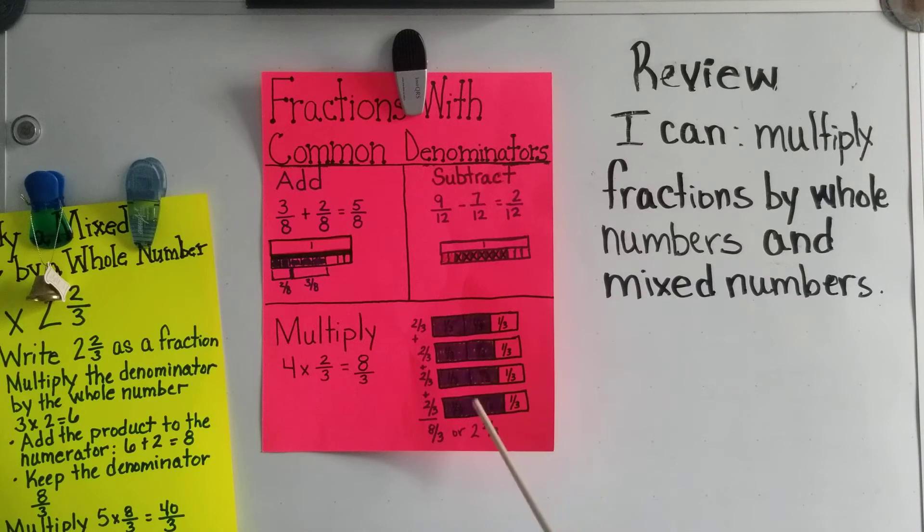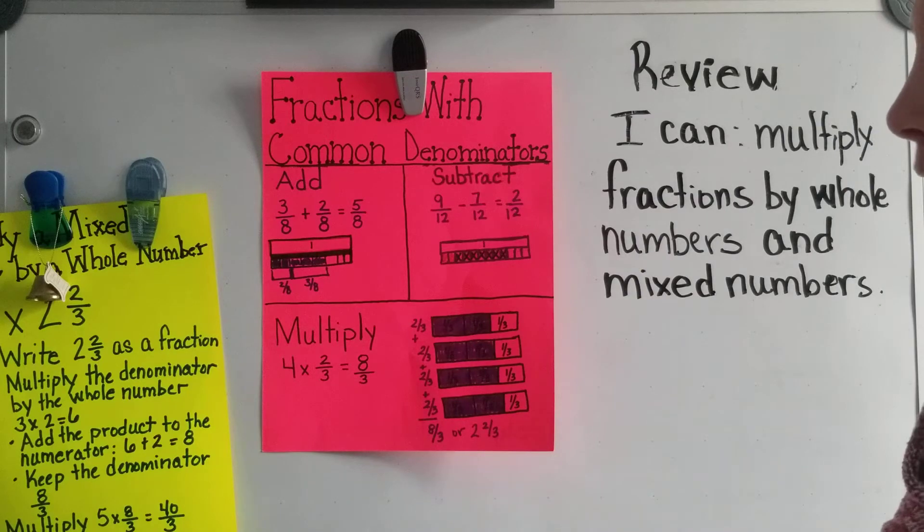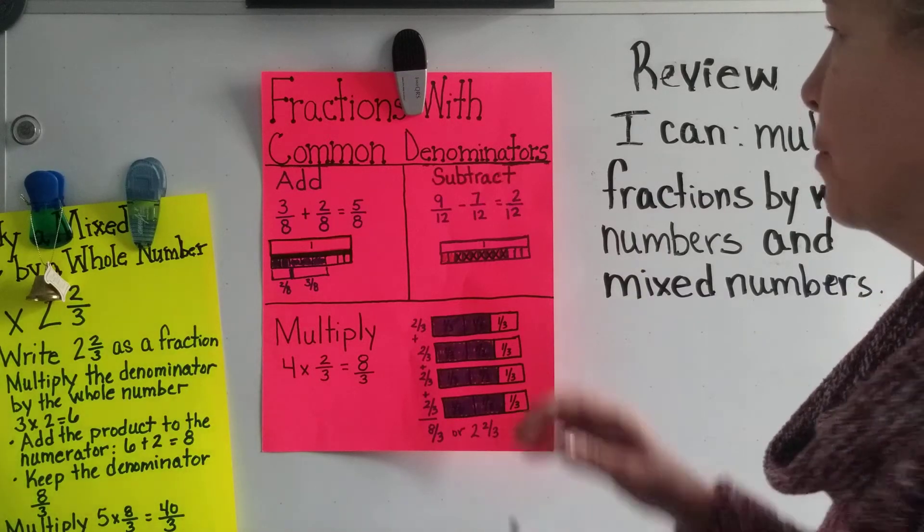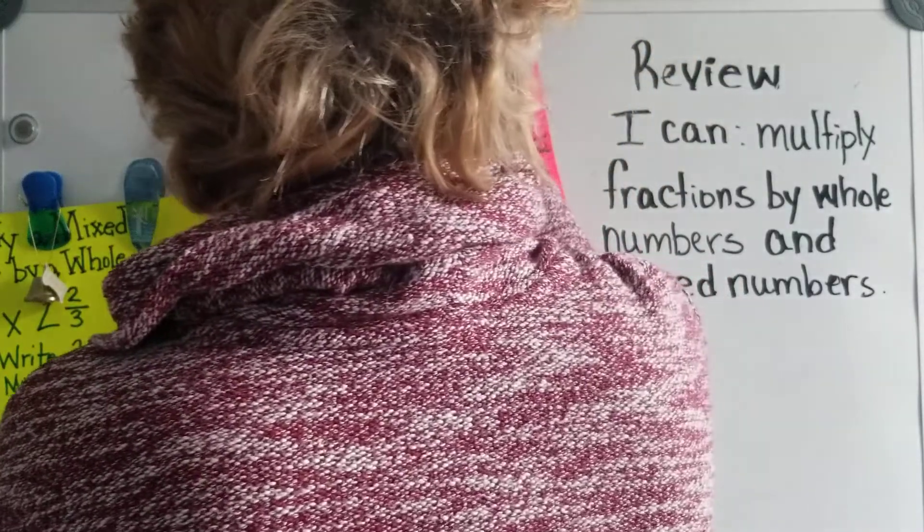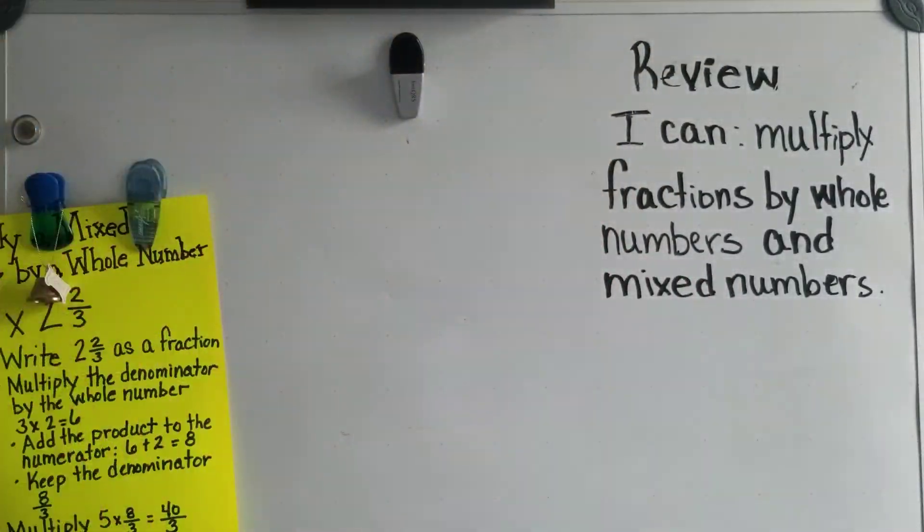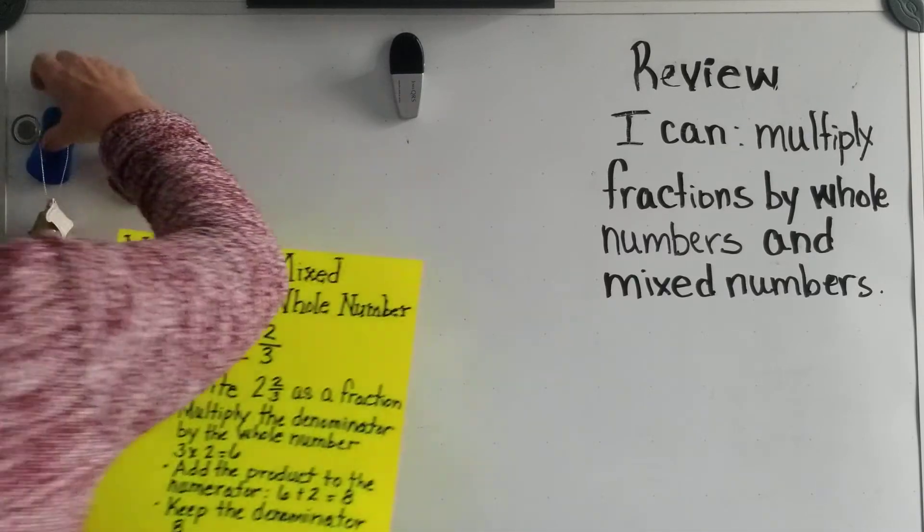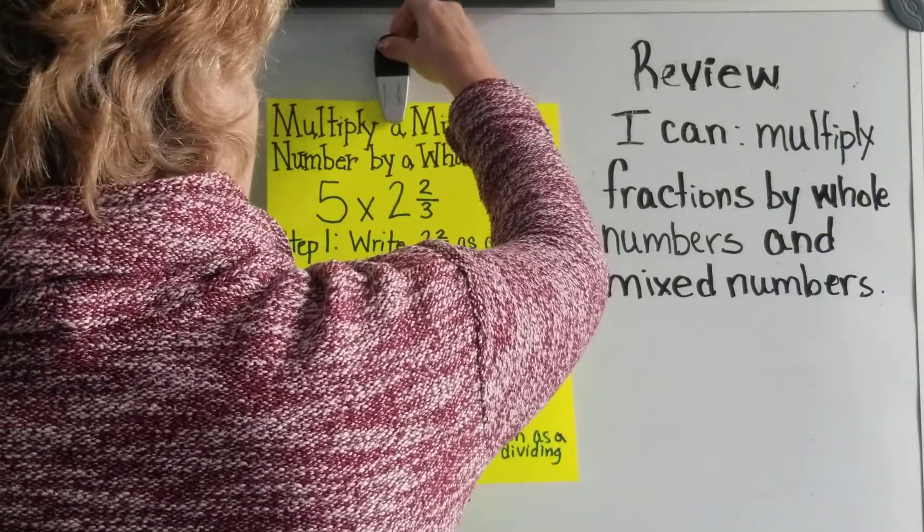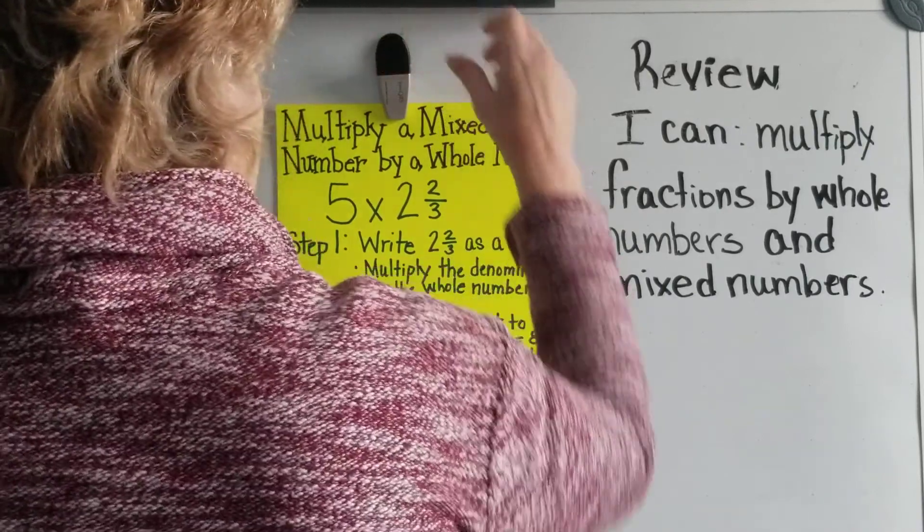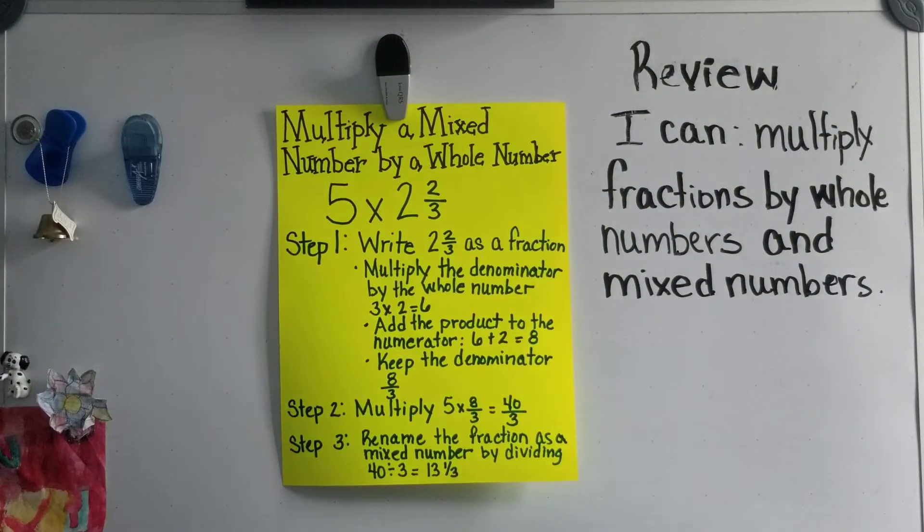Next one we're going to talk about is multiplying mixed numbers by a whole number. Okay, so I have the example of five times two and two-thirds.